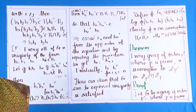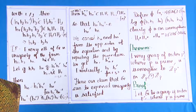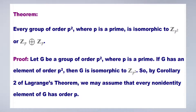Theorem: Every group of order p², where p is prime, is isomorphic to Z_{p²} or the external direct product Z_p × Z_p. Proof: Let G be a group of order p², where p is prime. If G has an element of order p², then G is isomorphic to Z_{p²}. Otherwise, we apply Lagrange's theorem.